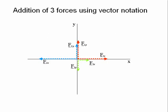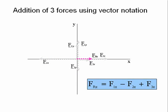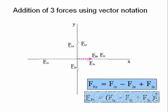Next, all the magnitudes of all the x components are added together to give the magnitude of the x component of the resultant force. The magnitude of FRx is equal to F1x minus F2x plus F3x. Or, the vector equation is FRx equals F1x minus F2x plus F3xi.